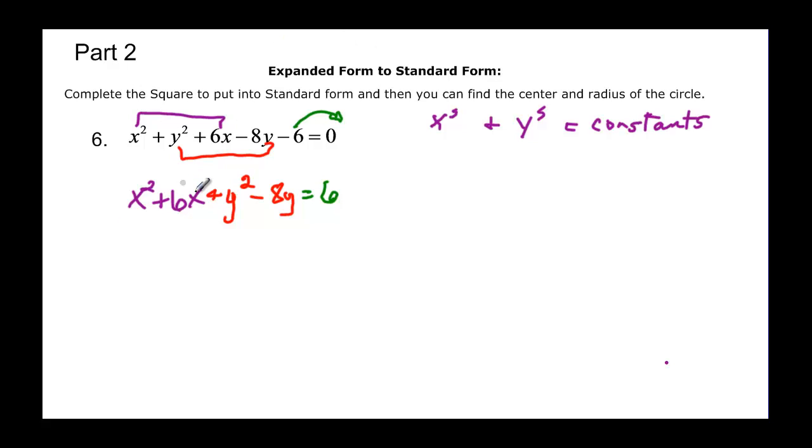Now when we complete the square, we really need to have a little bit of space here. So let's rewrite this as x squared plus 6x plus some number, plus y squared minus 8y plus some number. That will be equal to the 6 that we already have, but if I add something to one side, I have to add it to the other side, so I have to add those two constants on this side as well.